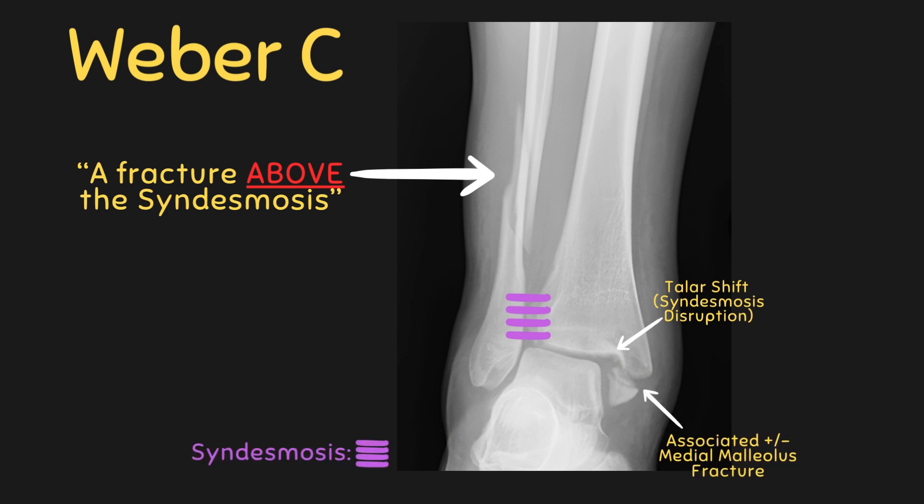Weber C fractures occur above the level of the ankle syndesmosis. These fractures are almost always unstable and cause a disruption to the ankle syndesmosis. As a result, you may see an x-ray appearance like the one on screen whereby there is an abnormal alignment of the talar joint, referred to as talar shift, where the talus has shifted from its normal position due to ligament disruption. Weber C fractures may also present with an associated medial malleolus fracture. Treatment for these injuries will usually involve an operative approach in the form of an open reduction internal fixation procedure.